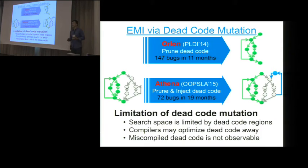However, there are still some limitations of dead code region mutation. First, the search space is limited by the number of dead code regions. For example, in the extreme case, a program might have no dead code regions. Therefore, the two tools, Orion and Athena, will have no room to play with their mutation strategies. Secondly, the compiler might be smart enough to identify dead code regions. So even if you mutated dead code regions, it might be later removed by the compiler. The last limitation is that if a compiler bug is triggered, and suppose the bug is a miscompilation, the bug only manifests in the dead code regions. Since you are running the mutant with the same input, there is no way for you to observe the failure of the compiler.